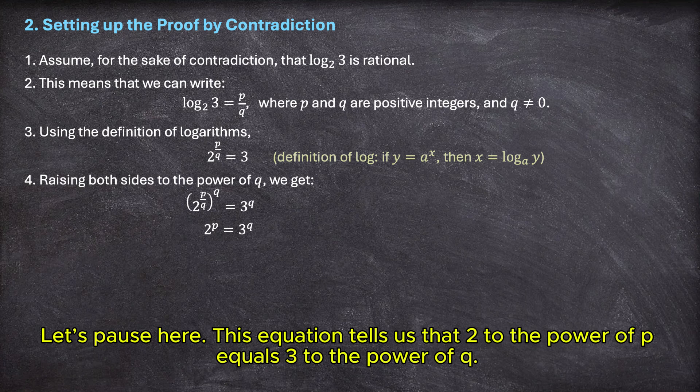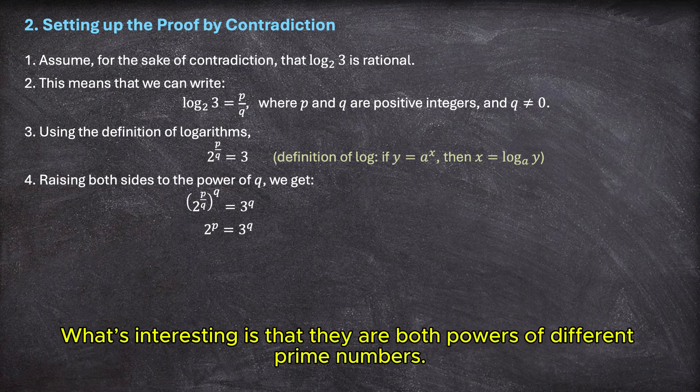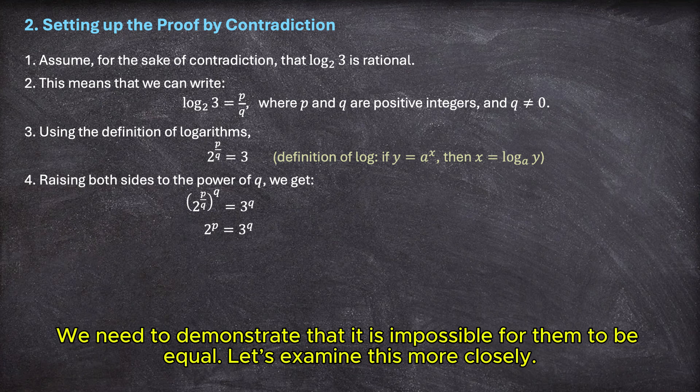This equation tells us that 2 to the power of p equals 3 to the power of q. What's interesting is that they are both powers of different prime numbers. We need to demonstrate that it is impossible for them to be equal. Let's examine this more closely.